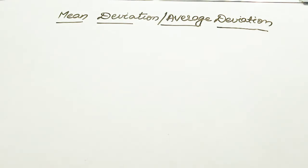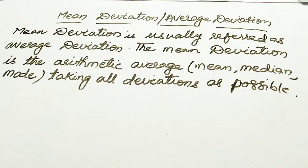Mean deviation is also called as average deviation. The mean deviation is the arithmetic average — that is, using your mean, median, and mode — taking all deviations as positive. We have to take all the deviations as positive. Today we are going to discuss average deviation using the mean method.